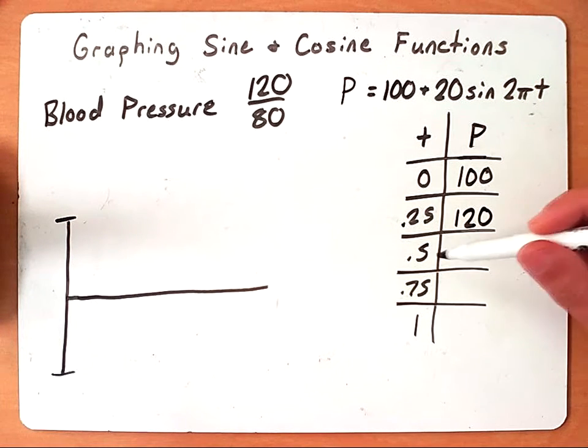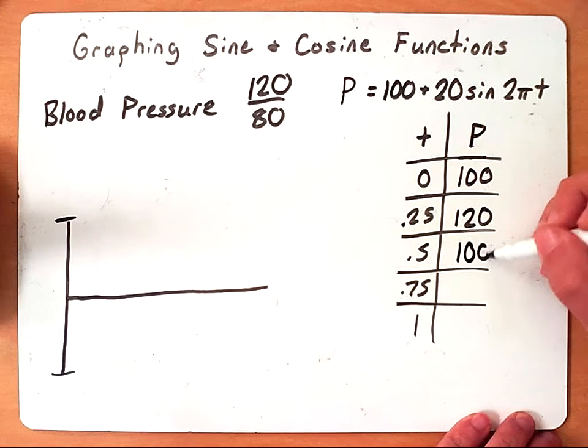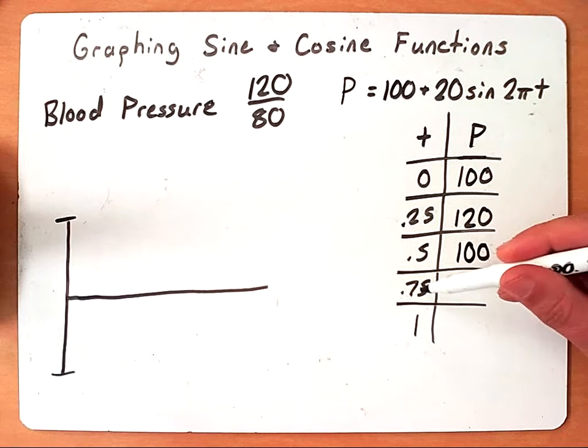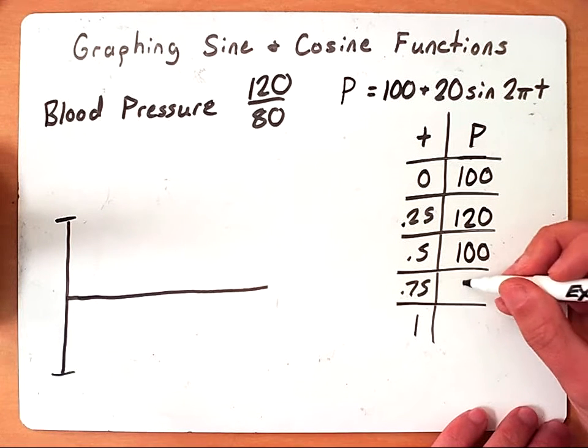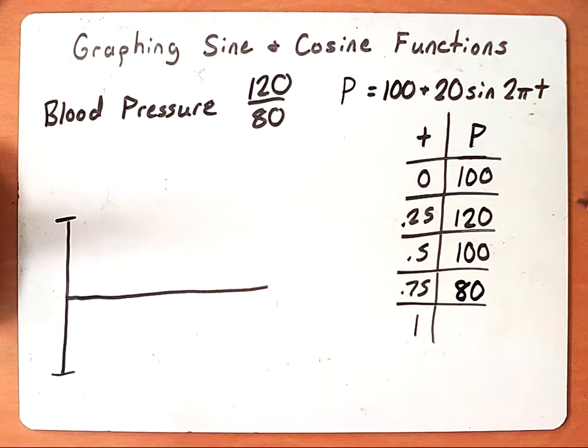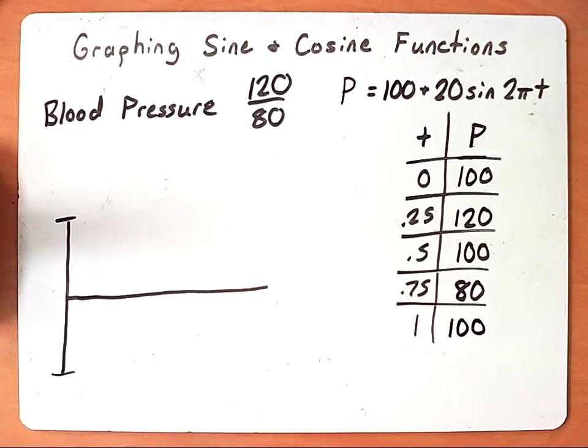If we plug in 0.5, we're going to see that their blood pressure has dropped back down to 100. If we plug in 0.75 for T, we're going to see that their blood pressure has continued to go down until it's at 80. And if we plug one in for T, we'll see that the blood pressure has risen back to its original 100.